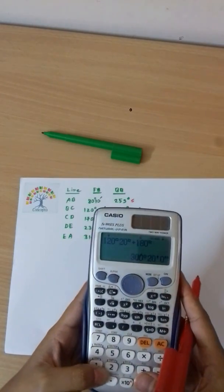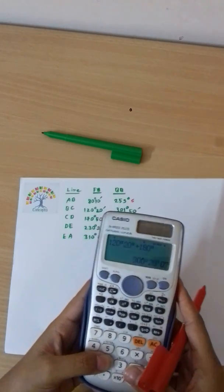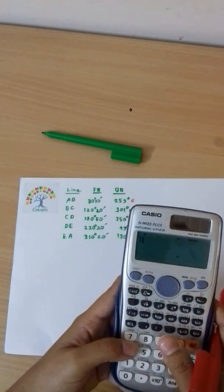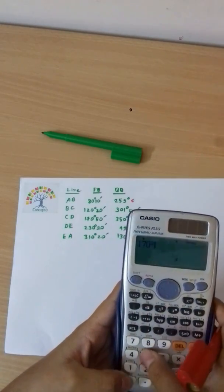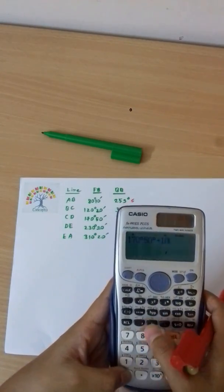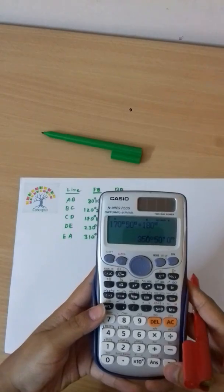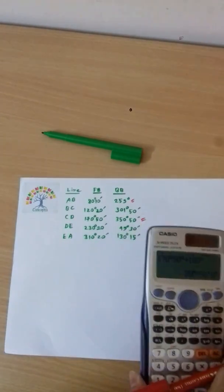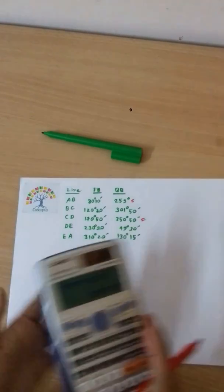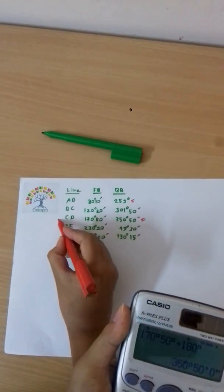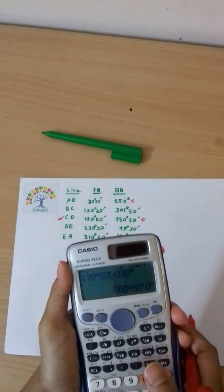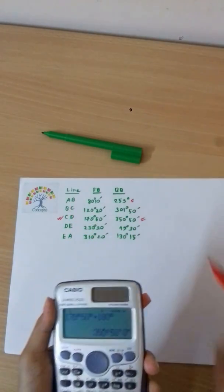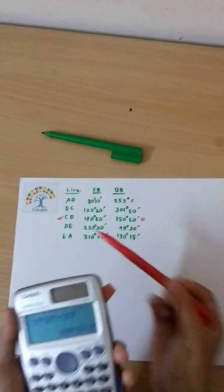Continuing with our bearings: Station C to D is 170 degrees 50 minutes. Station D to E measures 230 degrees 10 minutes. The back bearing of CD is 350 degrees 50 minutes. We need to check each station for local attraction by comparing forward and back bearings.